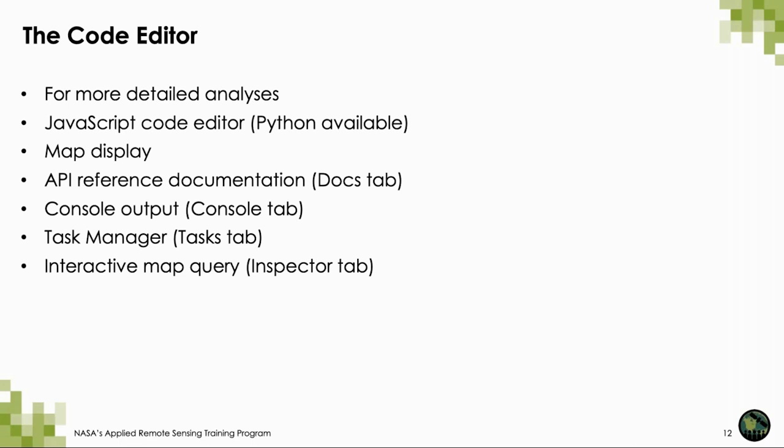Today we will be using the code editor side of Google Earth Engine — we will not be focusing on the API. This is for more detailed analyses such as the one we'll be running today, and it involves using a JavaScript code editor. There is Python availability, but we will not be covering that. The code editor also has a map display, API reference documentation in the docs tab, console output in the console tab, a task manager in the tasks tab, and an interactive map query in the inspector tab.